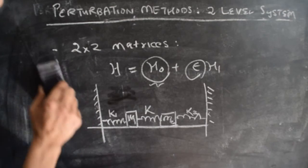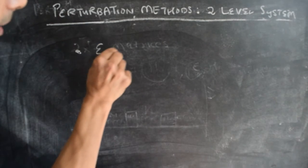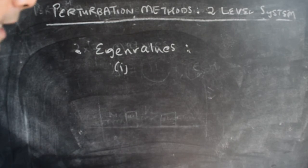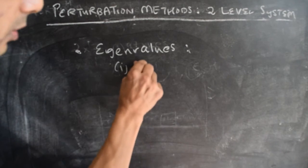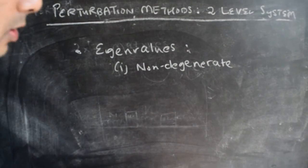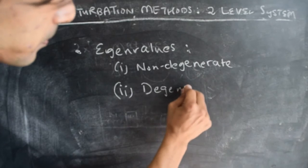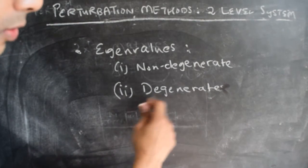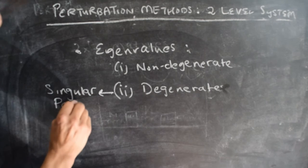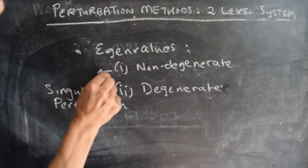Some key ideas that emerge from studying such a system: what happens to the eigenvalues in two different cases? What if the initial Hamiltonian H0 had eigenvalues which are the same — that is, degenerate eigenvalues? In the case of degenerate eigenvalues, this belongs to the class of singular perturbation problems. Whereas when we have non-degenerate eigenvalues, this belongs to the class of regular perturbation problems.